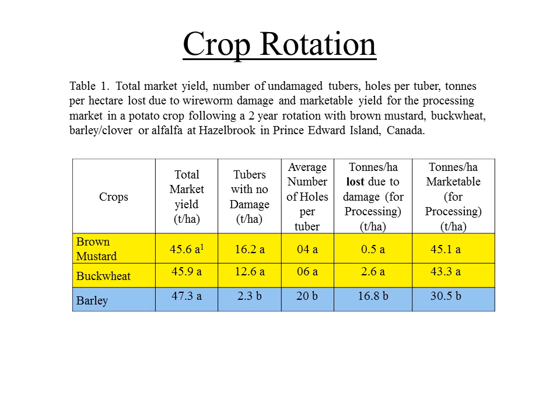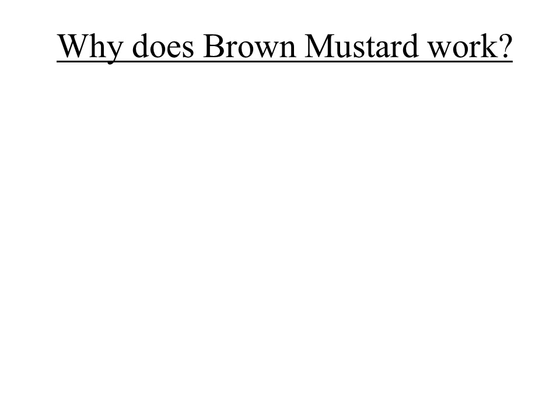Looking at the results: the number of holes per tuber was lower with brown mustard and buckwheat compared to barley. There was no significant difference in total and marketable yield, but the tons per acre for the processing industry were higher compared to barley.